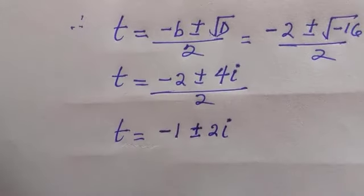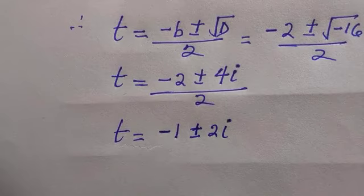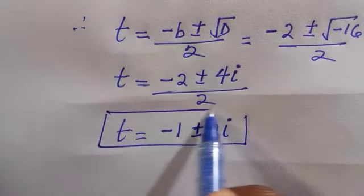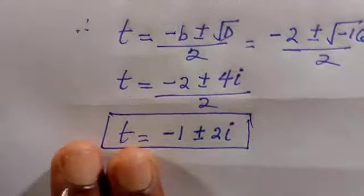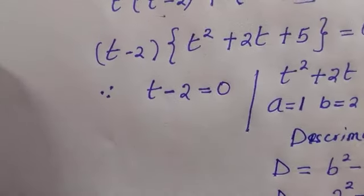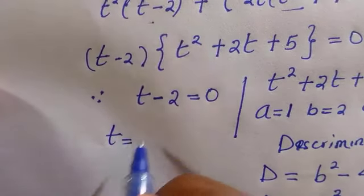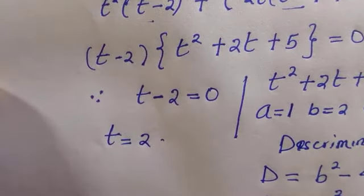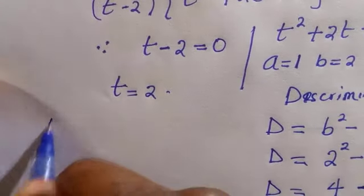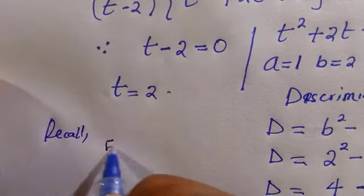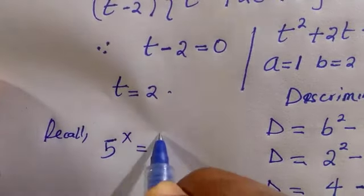So I'm going to leave this one for now for the value of t and I will deal with the value of t when it is minus 2 here. So t minus 2 equals 0, which we get the value of t equals 2. And we shouldn't forget that what we want to find is x, not t. We just made assumption that 5 to the power x equals t.